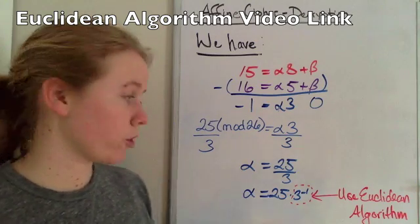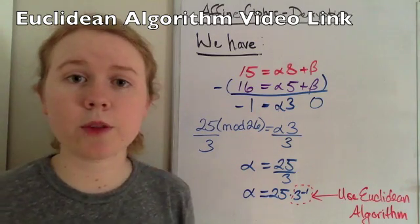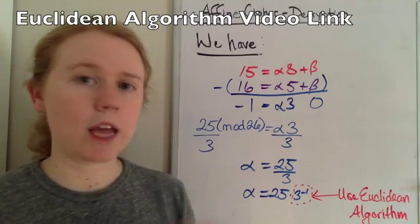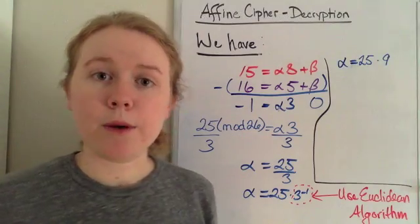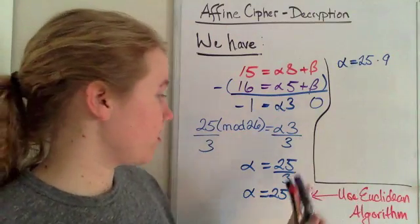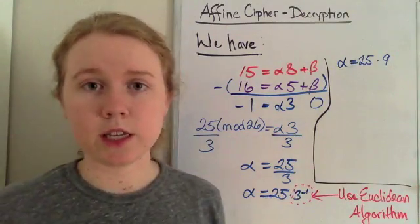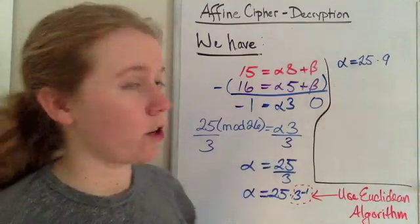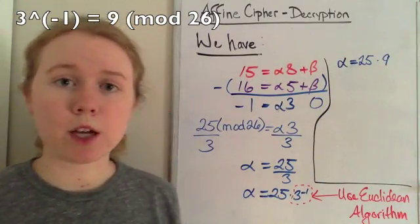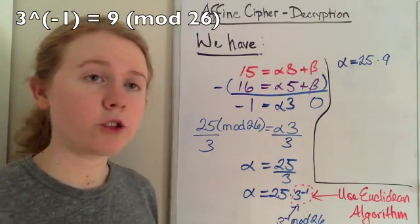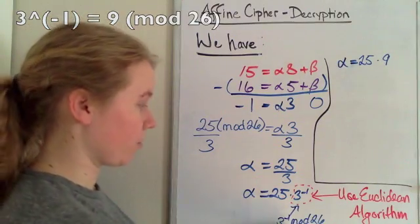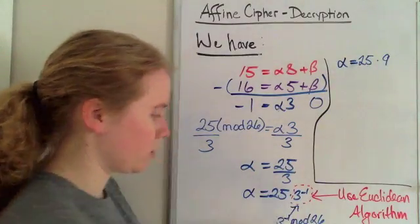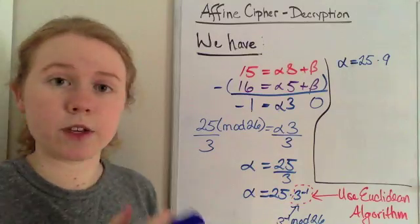If you don't know how to find the inverse of a number using the Euclidean algorithm, I have a link for that in the screen and in the description below. But for now, I am going to assume you do that separately since that takes a while, and I'm going to tell you that it is 9. The inverse of 3 mod 26 is 9. I'll also put the work for how I got from the inverse of 3 equals 9 mod 26 in the description below in case you're wondering about that specifically.